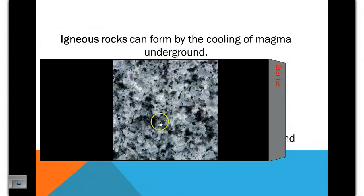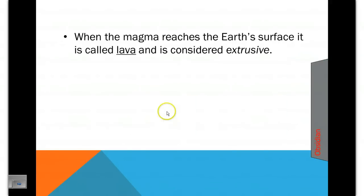Each of these little particles, the black and white parts, are the grains. When it reaches the earth's surface it changes from being magma and it turns into what we call lava. And since it has exited the earth's surface, it's considered extrusive.